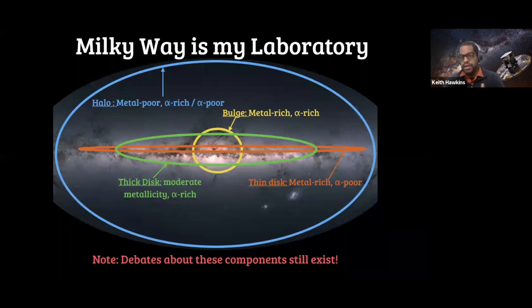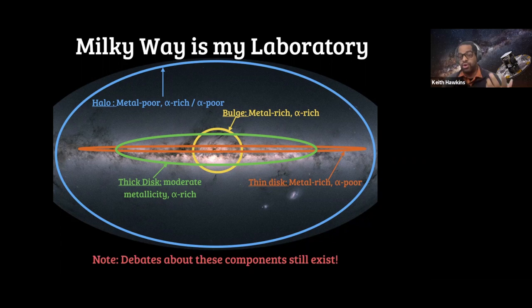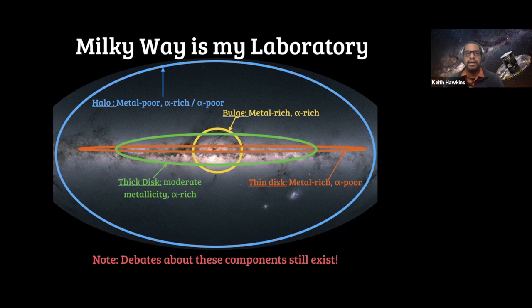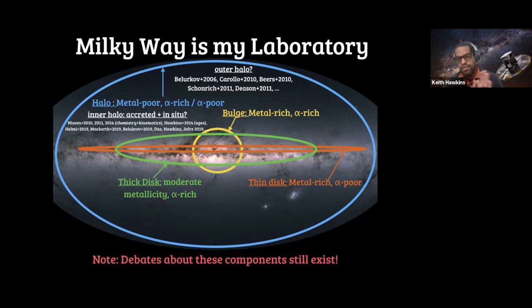My PhD advisor, Jerry Gilmore — Gilmore and Reid — was one of the discoverers of the galactic thick disk in the 1980s. Since then there's been a lot of debate: does the Milky Way actually have a thin disk and thick disk, or is it just one disk? Even as recently as 2012–2014, there were articles in the literature saying there is no thick disk. There's also constant debate about whether the stellar halo has an inner and outer component, and whether it has in-situ and accreted material. There's tons of literature about these various Milky Way components.